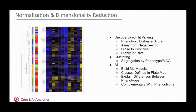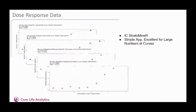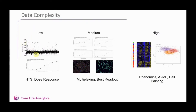Strataminer also allows you to use artificial intelligence — a supervised method. Using cell-resolution data from Encarta, you can build machine learning models. For example, Strataminer can build a three-class random forest machine learning model to rank all wells according to similarity to docetaxel, doxorubicin, and the untreated controls. Strataminer also has a simple app for dose response, very useful especially when generating large numbers of dose response curves, and it can also be used in a clever way with phenotypic data. One thing I'd like to make clear is that Strataminer is not just useful for highly complex data — you can also use it for single measurement data from traditional high-throughput screens, multiplexed data, or something as complex as cell painting.